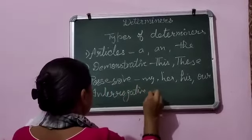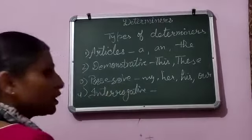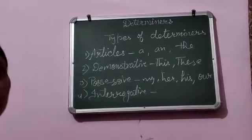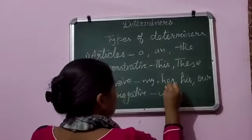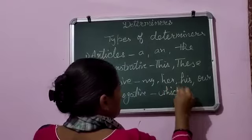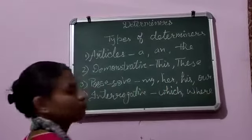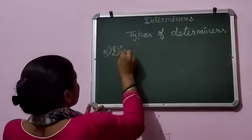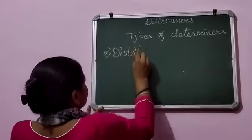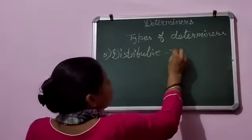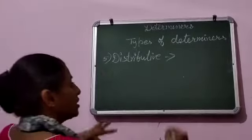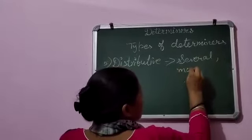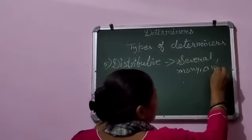Fourth is interrogative. Interrogative कौन से होते हैं? जो हमें किसी question की तरफ indicate करते हैं — जैसे which, where, etc। Number 5 है distributive। Distributive determiners जो हमें चीज़ के बारे में बताते हैं कि कितनी चीज़ें हैं — जैसे several, many, any, etc।